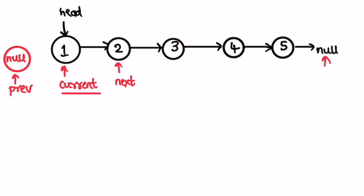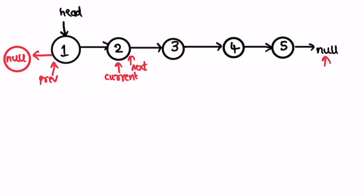In each iteration of the while loop, we point current.next to previous, then move the three pointers for the next iteration: previous moves to current, current moves to next. Before moving next to current.next, we check if next is not equal to null, because next is one step ahead of current. Since next is not null here, we move next to current.next, completing the first iteration.